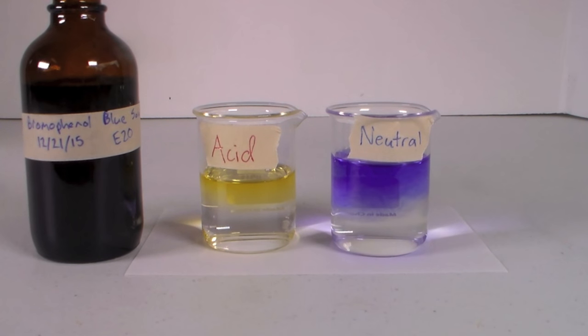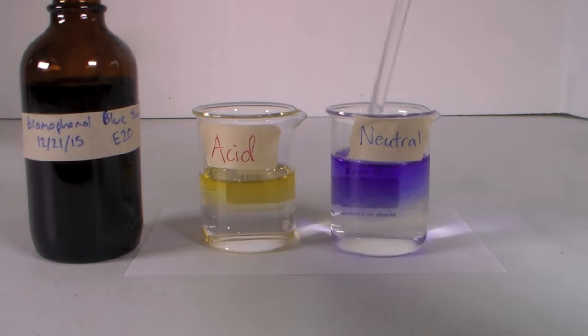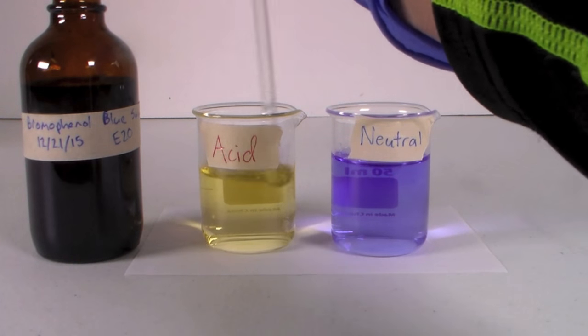This is because bromophenol blue is yellow when the pH is below three and blue when the pH is above four point six.